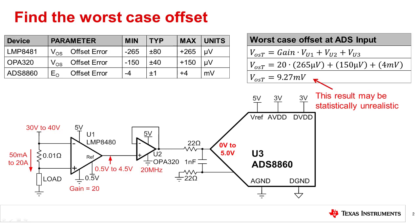Let's start with a basic error analysis to better understand the concept of calculating total offset error in a system. This slide shows the example circuit that we will use for this error analysis. It is a high side current shunt monitor that will monitor currents from 50 milliamps to 20 amps.